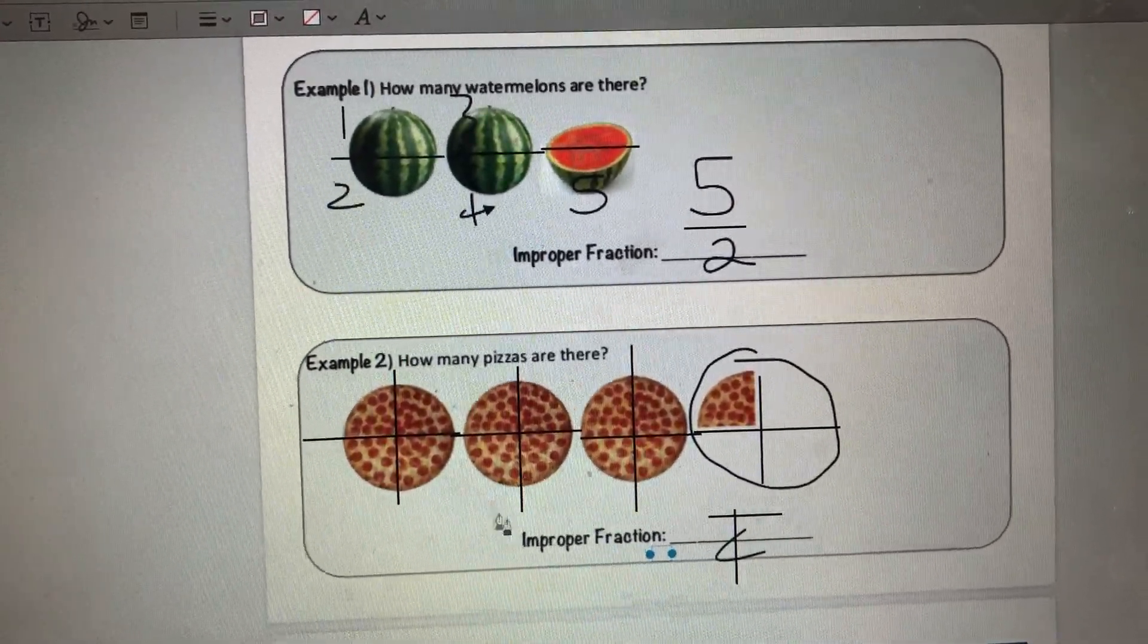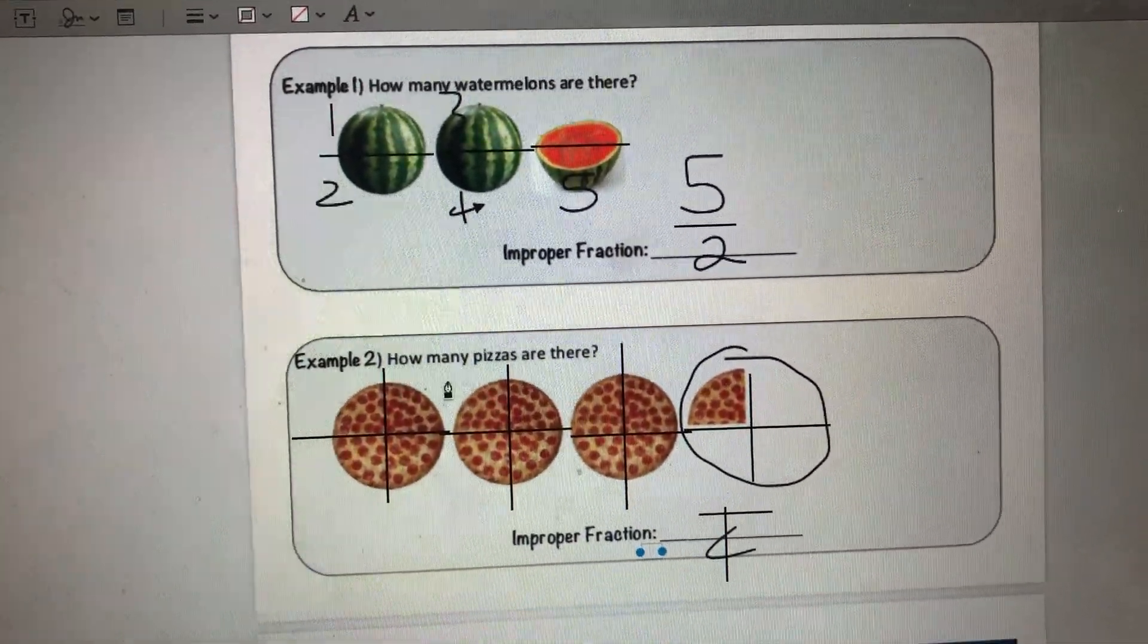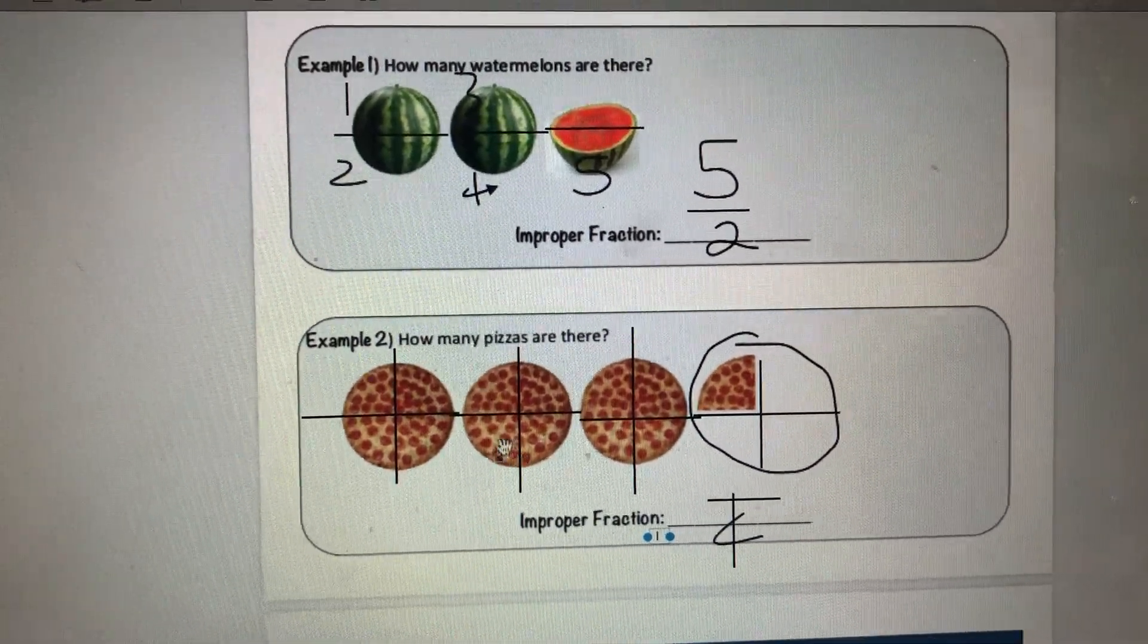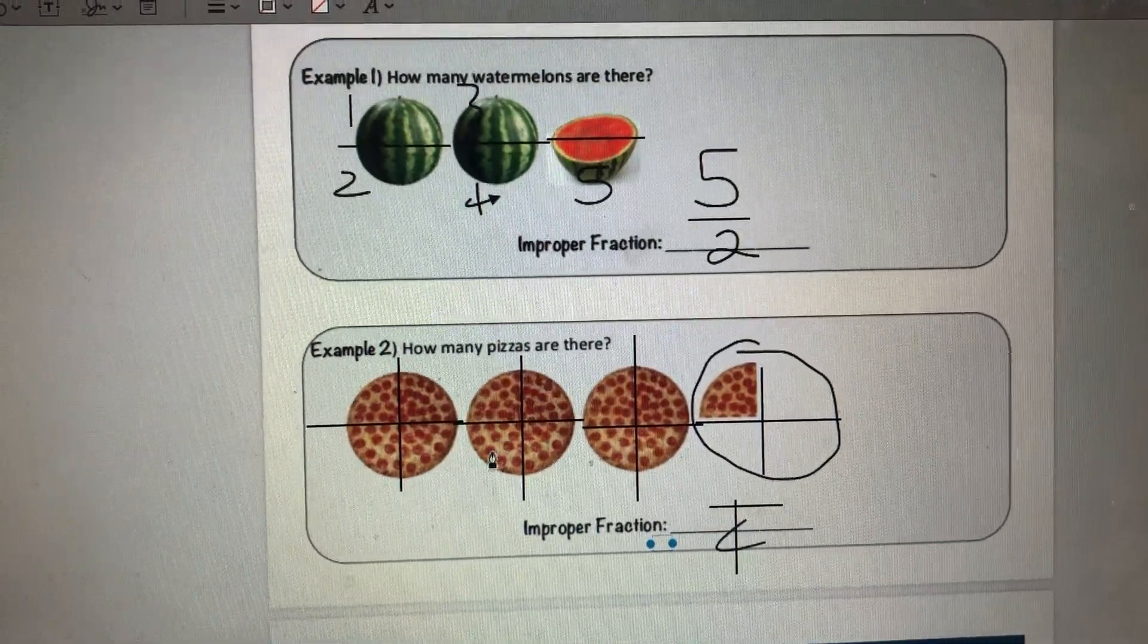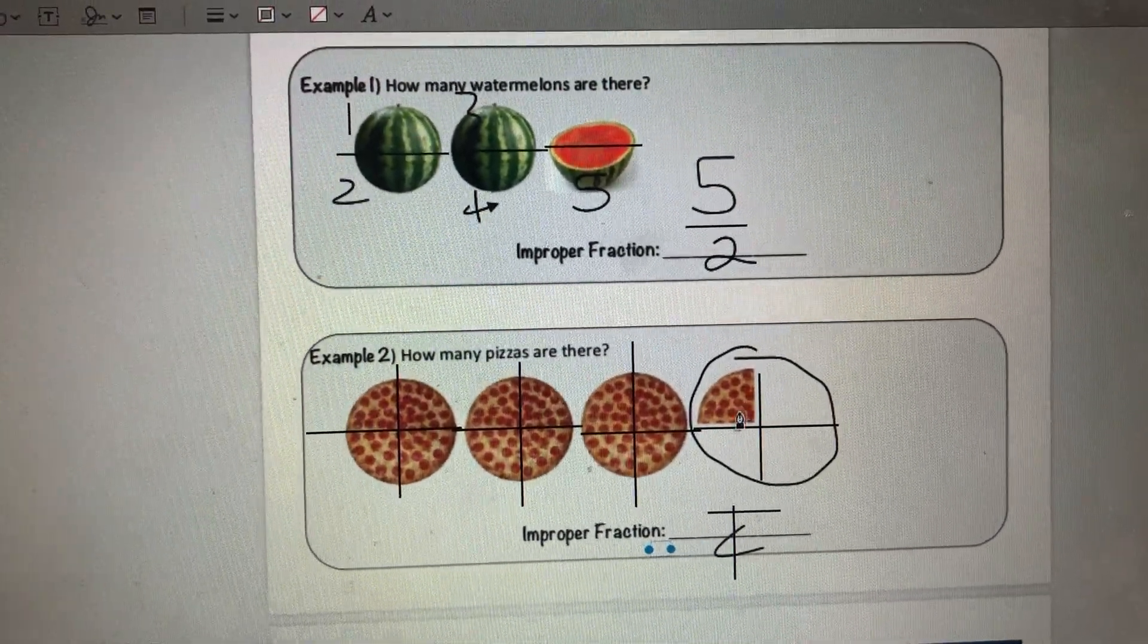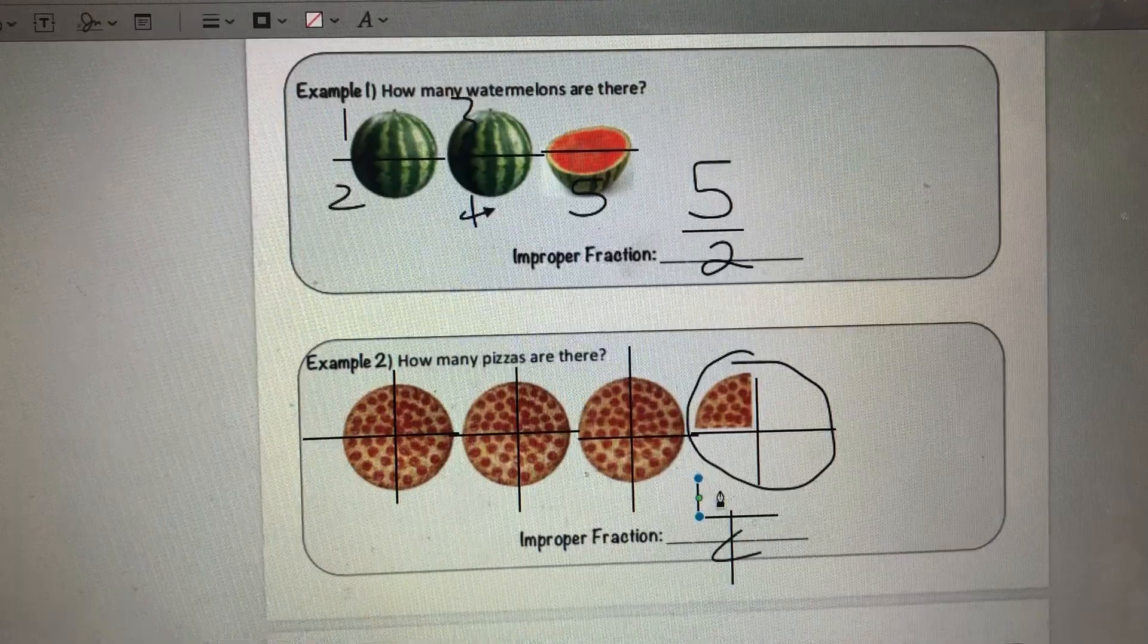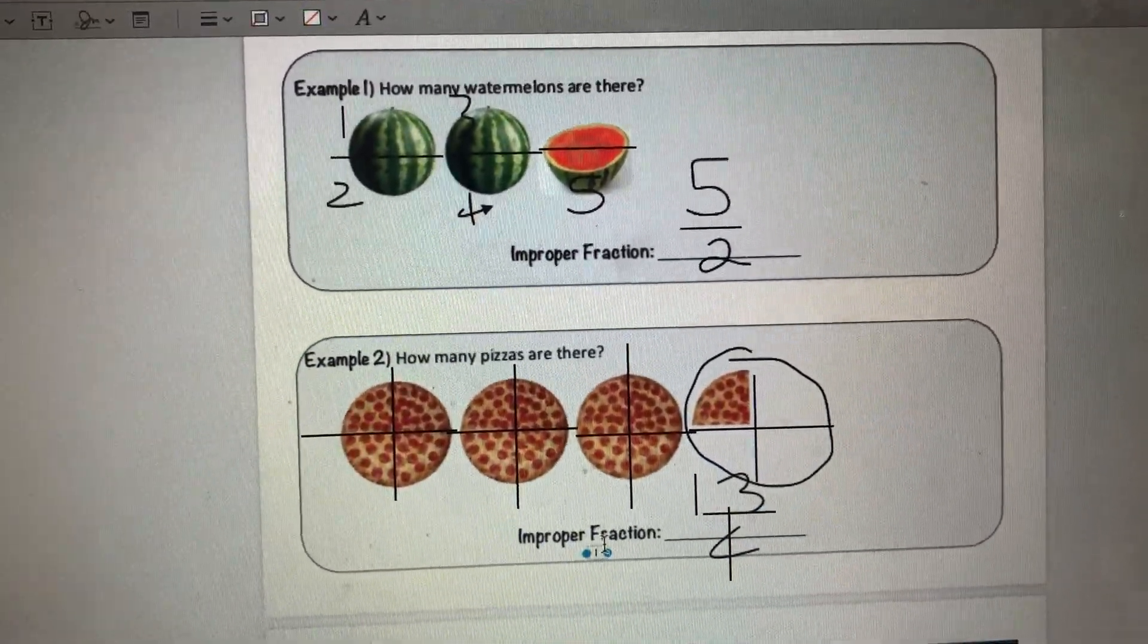Now I need to count up all of the parts in every single whole for my numerator, the total parts in all of the holes. So I have one, two, three, four, five, six, seven, eight, nine, 10, 11, 12, 13. 13 total parts means the total number of pizzas there are are 13 fourths.